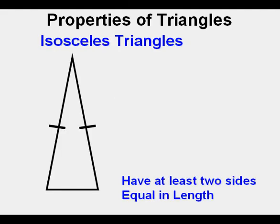The next category we will look at is an isosceles triangle. Isosceles triangles have at least two sides that are the same length. Isosceles triangles also have two angles that are equal.